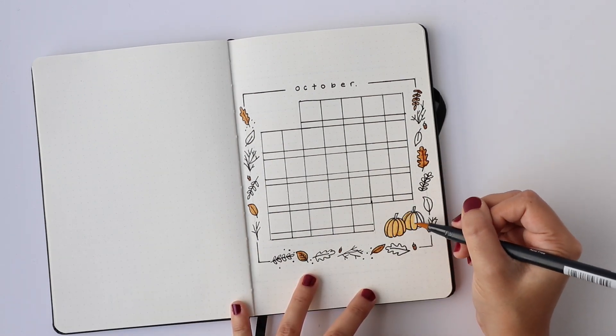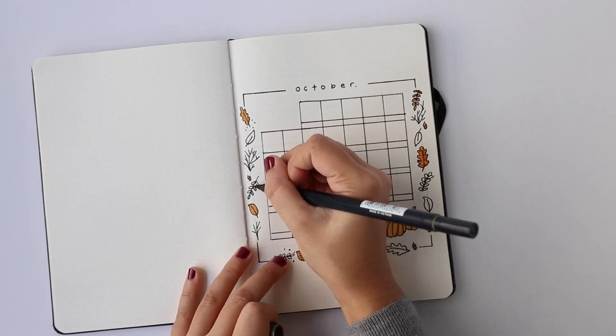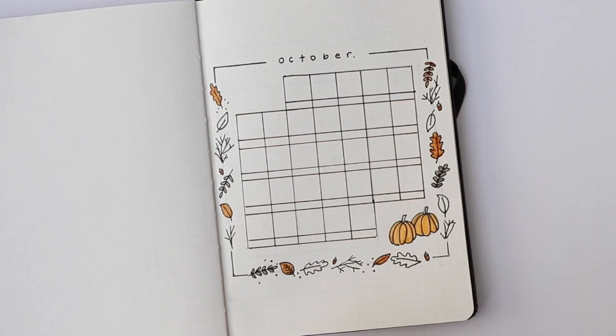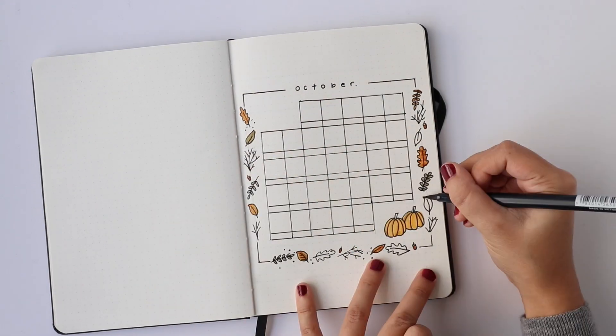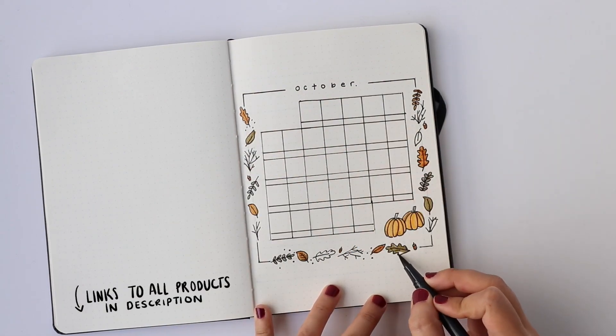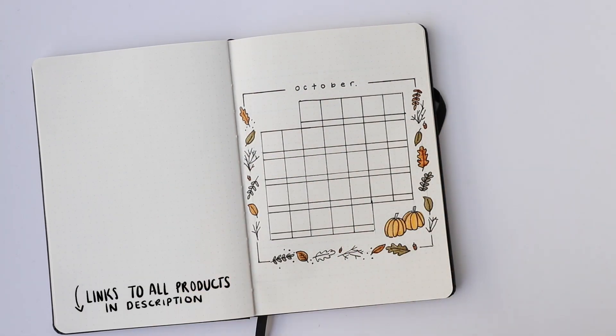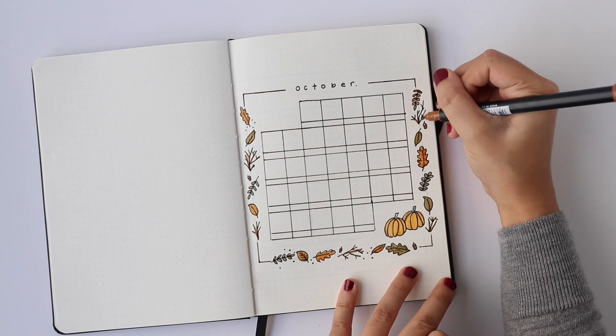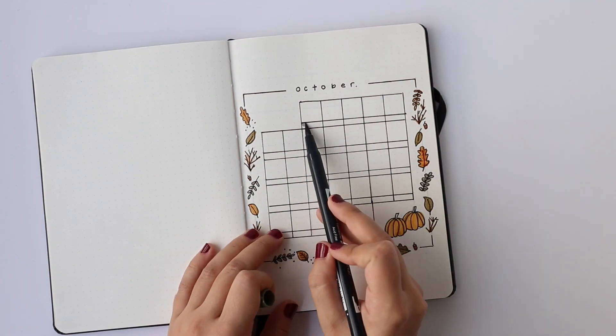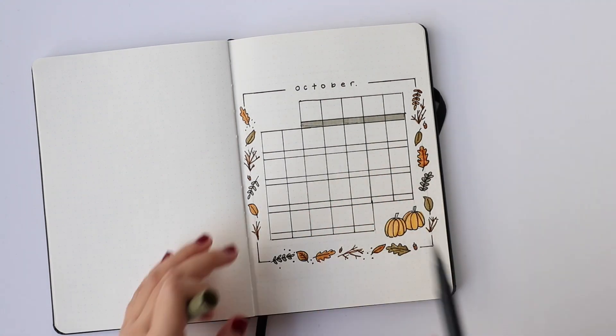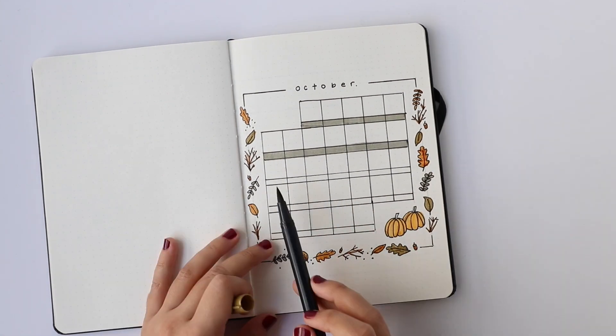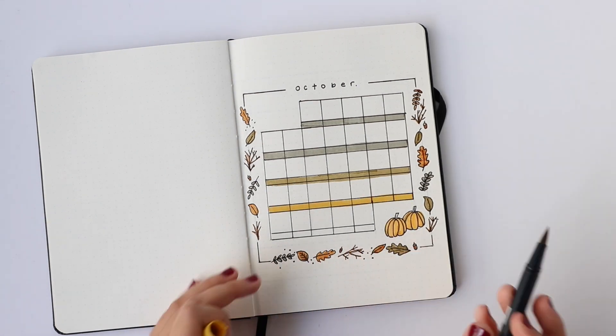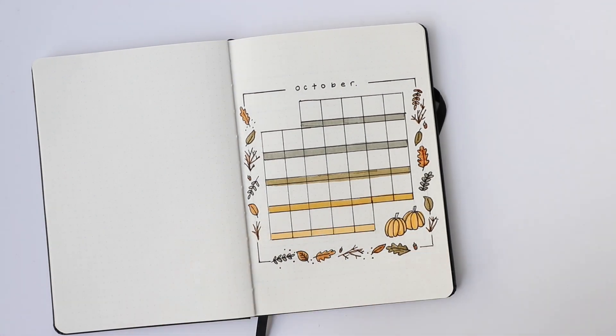I just sometimes like to incorporate the habit trackers into either the weekly spread or the month at a glance spread because some months I'm just not feeling having a whole dedicated page to it, and I do find that it does sometimes make it easier to be consistent in filling these habit trackers out when they're put into spreads I actively use a lot, which the month at a glance and the weekly spreads are the ones that I'm always looking for because that's where the most planning happens in my bullet journal.